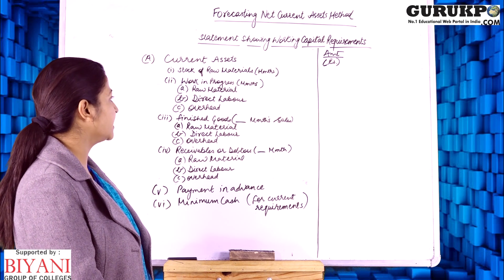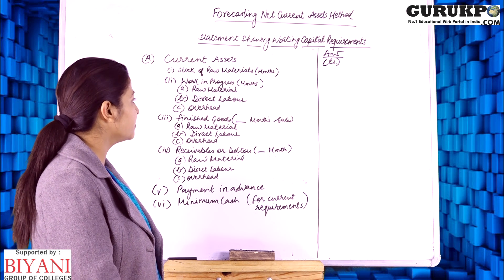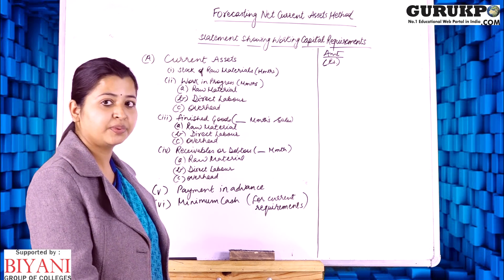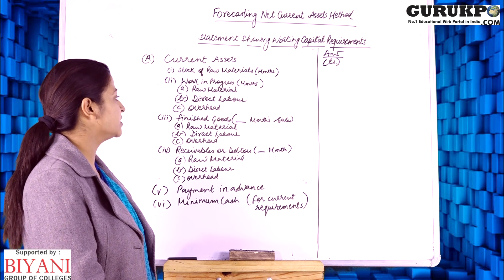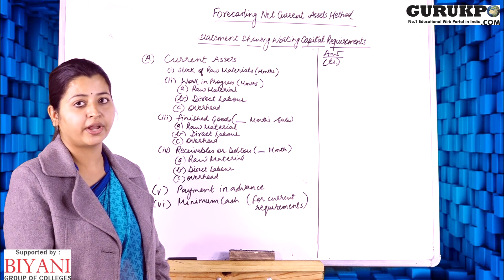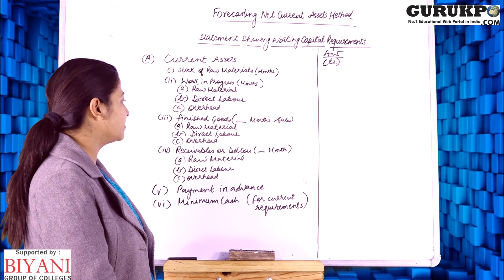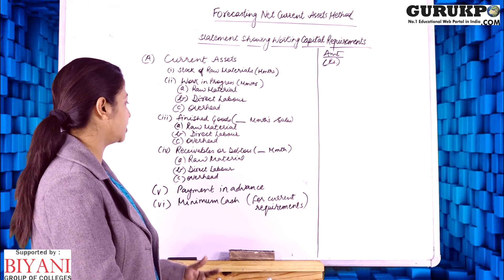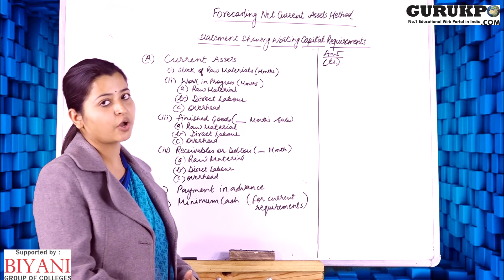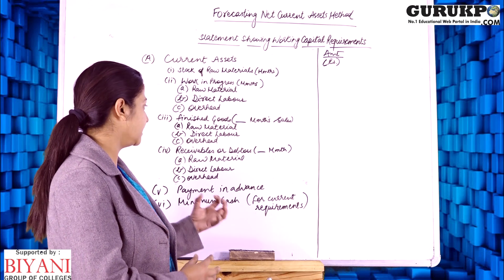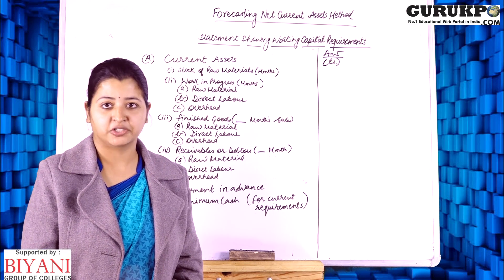Then we take finished goods — stock of finished goods and its duration period, storage period, and the sales period. After that, under receivables or debtors, we include raw material, direct labour, and overhead. The months, weeks, or days are taken on the basis of the debtors collection period.